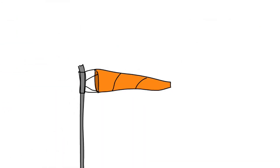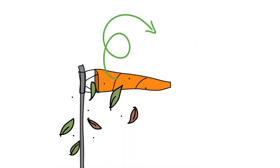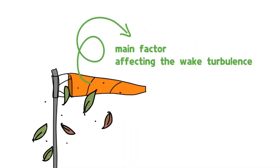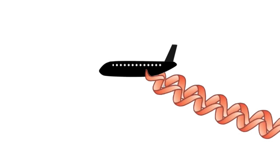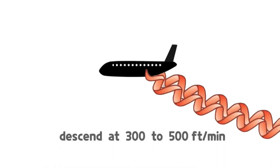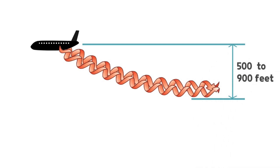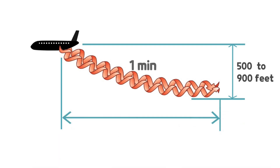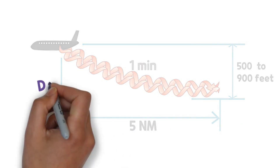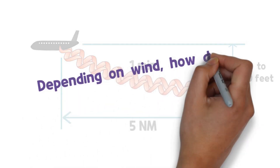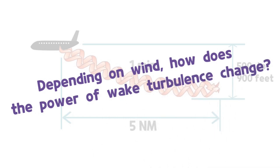Lastly, let's look at wind, which is the main factor affecting wake turbulence. The vortices from an aircraft tend to descend at approximately 300 to 500 feet per minute during the first 30 seconds. After that, they descend approximately 500 to 900 feet and then disappear. On average, wake turbulence lasts about one minute and affects up to 5 miles in distance. Then, depending on wind, how does the power of wake turbulence change?